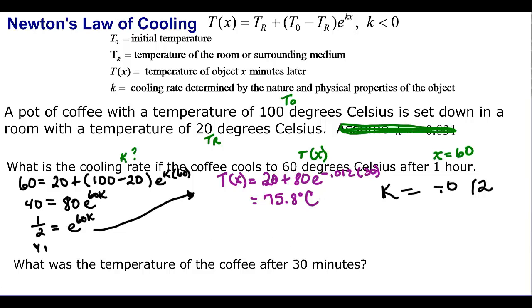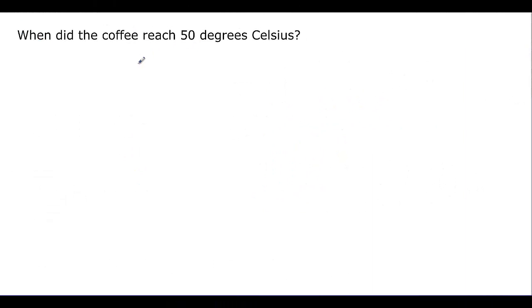And then next we have, when did it reach 50 degrees Celsius? Well, we know that's T of X, and we know that it was 20 plus 80 times E to the negative .012. That was our K.